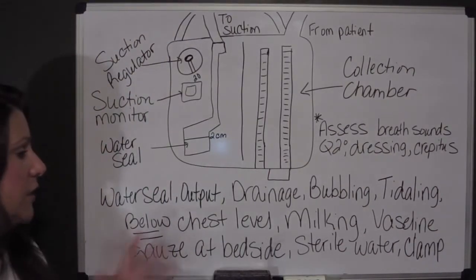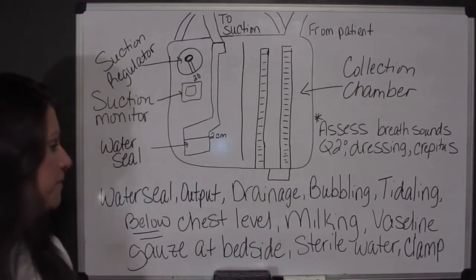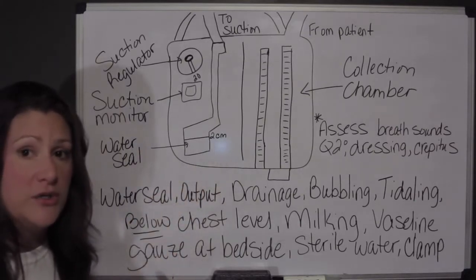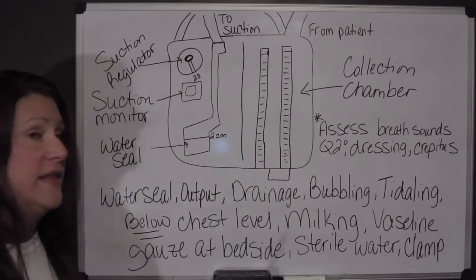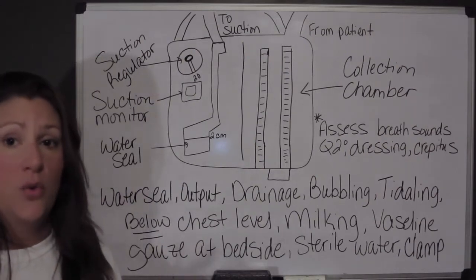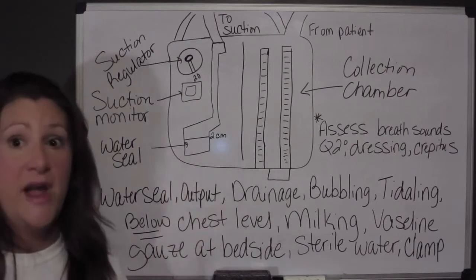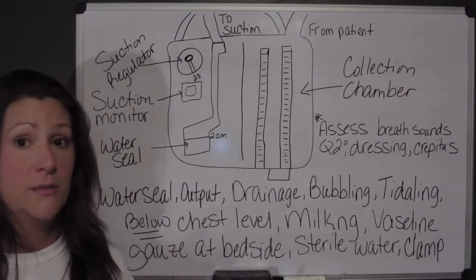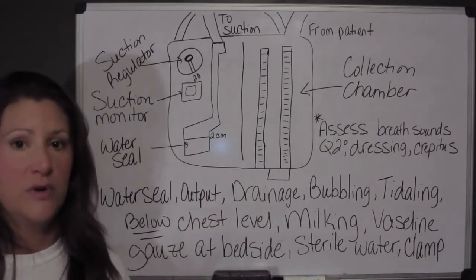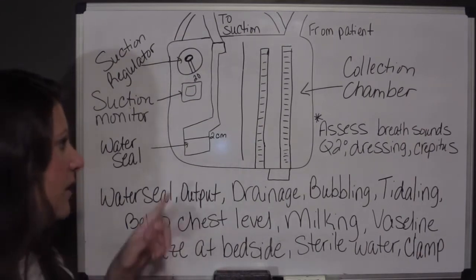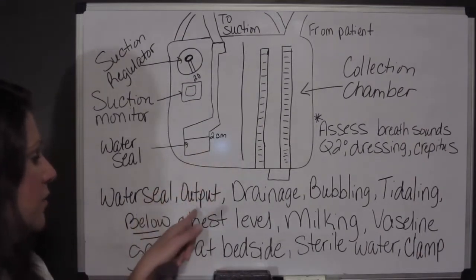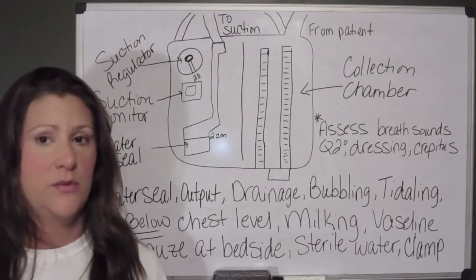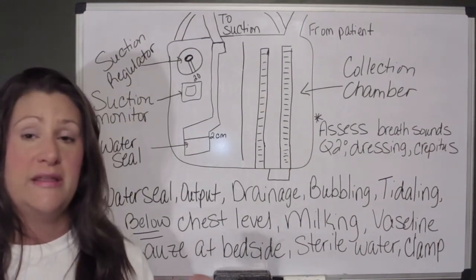The next thing we will talk about with the care of the chest tube is the water seal. I've already mentioned the level of the water seal — it needs to stay at 2 cm, or whatever the provider orders. If your water goes away, your one-way valve and drainage system is not going to work and you can put your patient at risk for all kinds of complications. So you're monitoring the level of the water seal and looking at the output in the collection chamber — noting whether it is serosanguineous, whether it is becoming serous, and noting the amount.